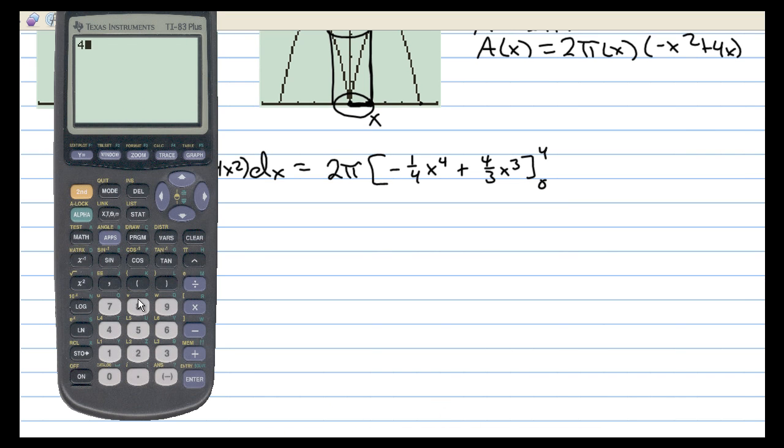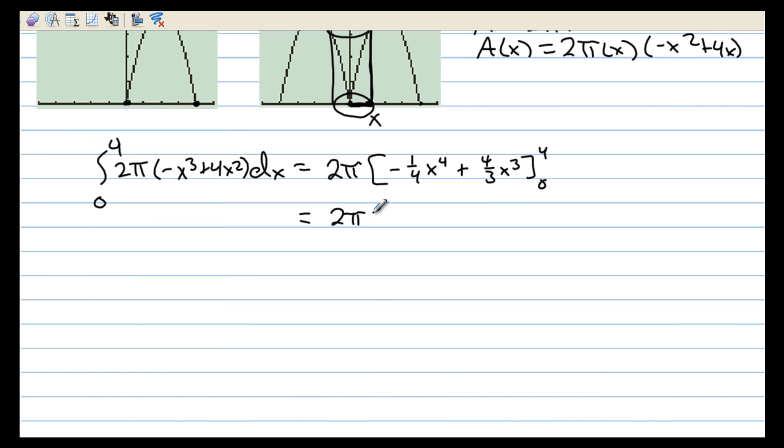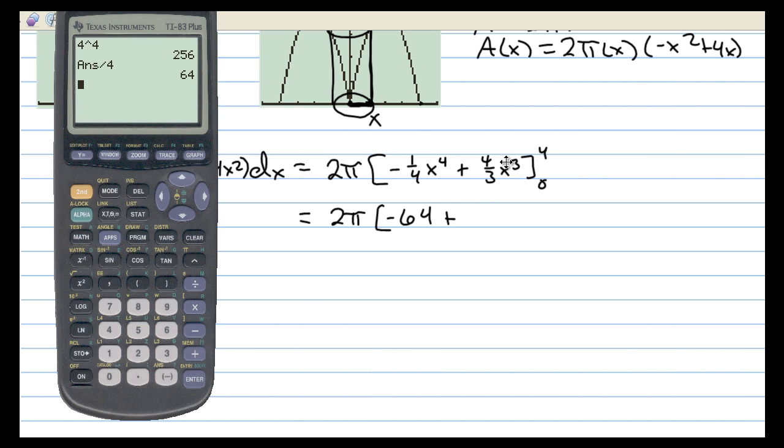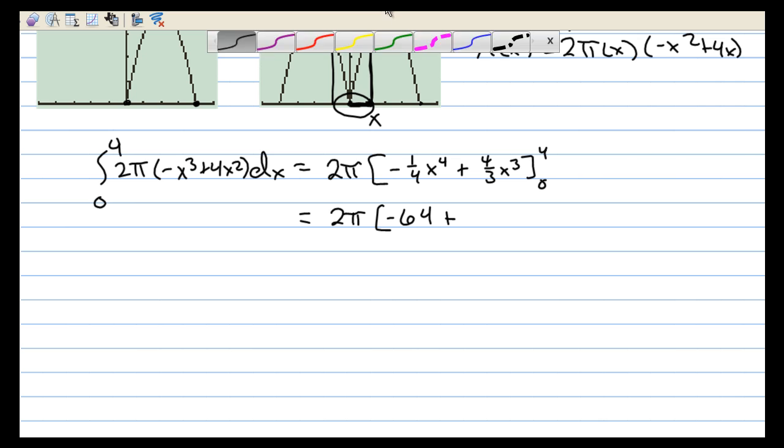4 to the fourth is 256. But then if I divide that by 4, we get 64. So we have 2 pi times, that's actually going to be negative 64, plus 4 to the third times 4, which is 256 over 3, plus 256 over 3. And of course, minus 0. Both of those would be 0.